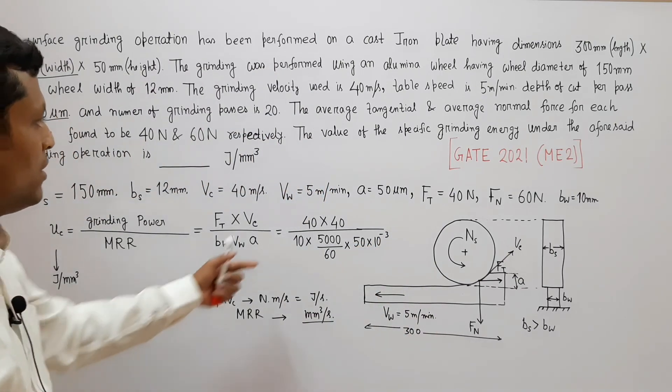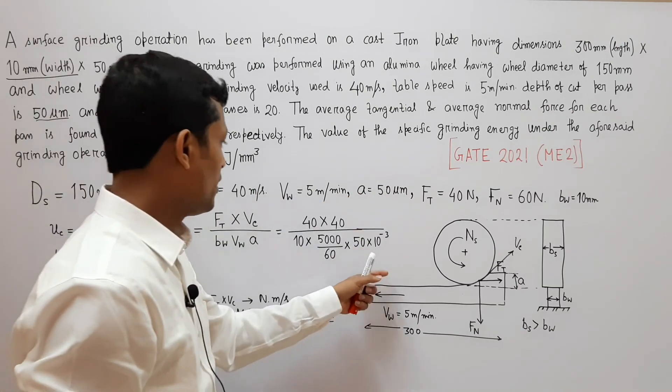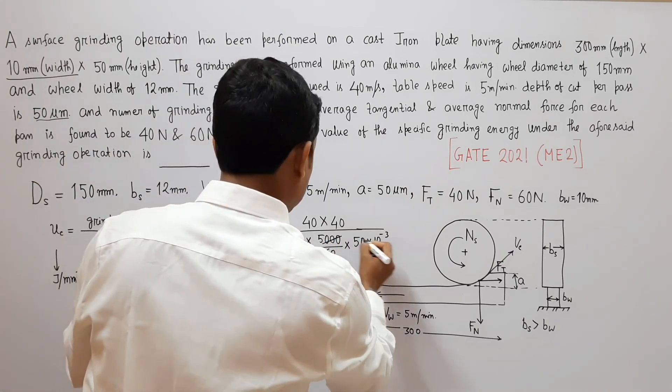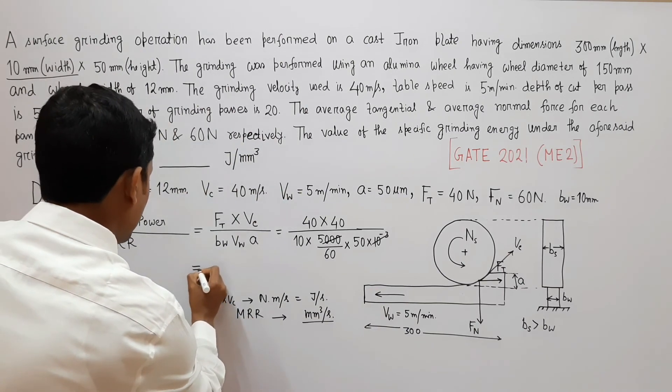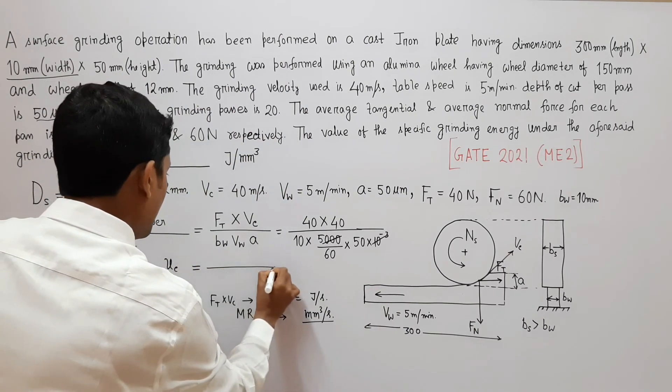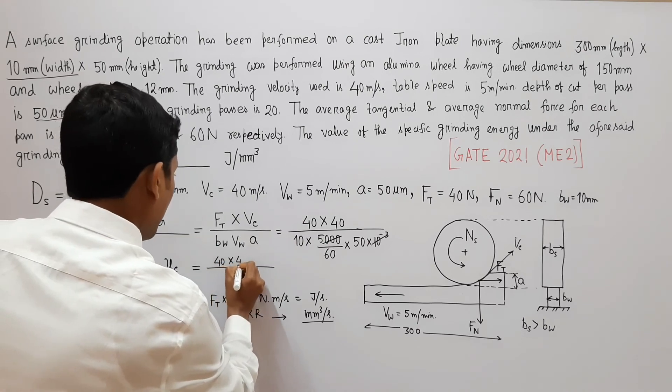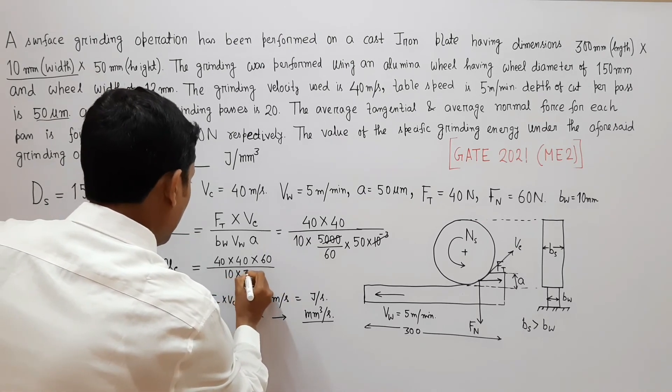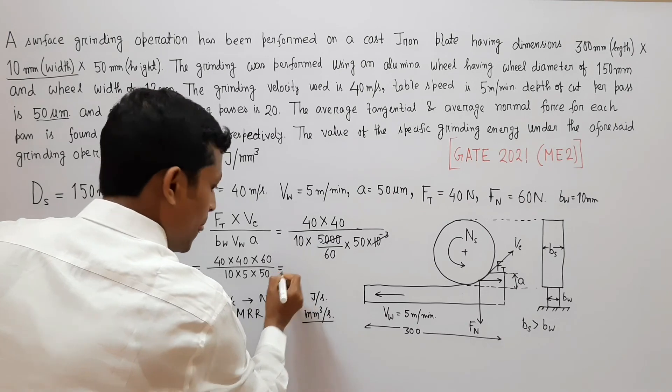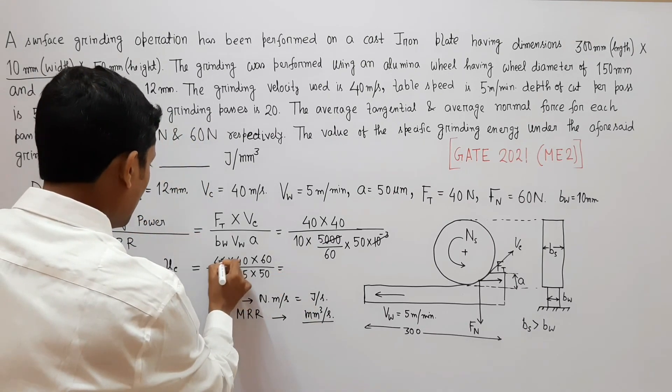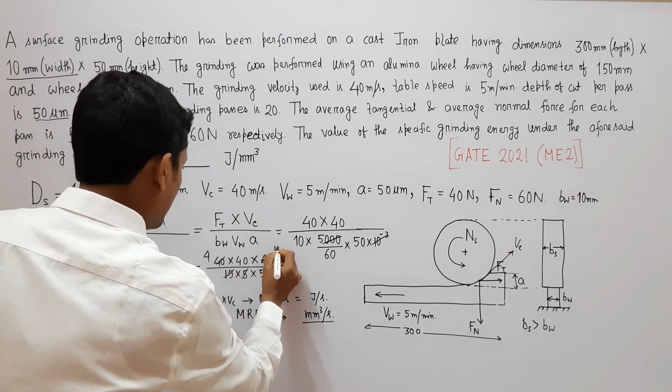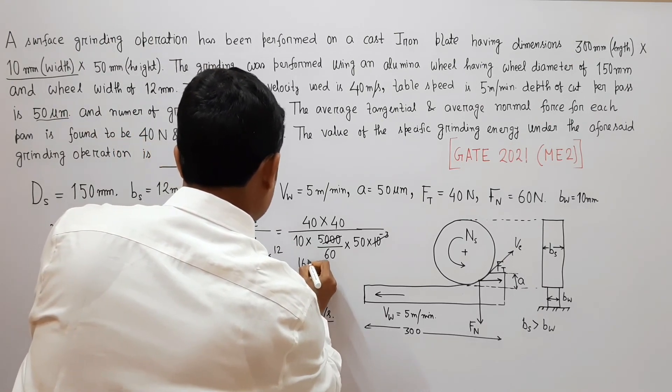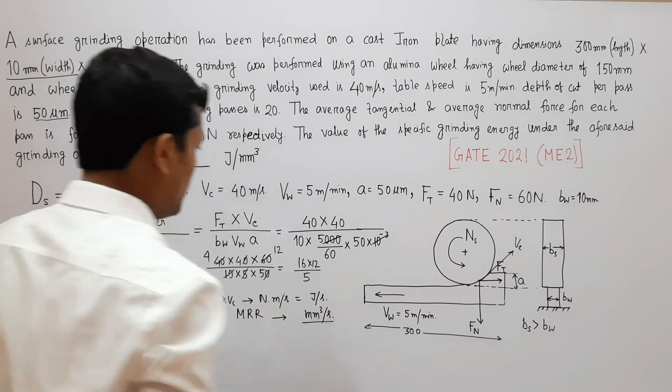Then second will be cancelled out and we will get joule per millimeter cube. So we have to take all these units in millimeter and Vw will be in millimeter per second. So B_w value is 10 millimeter, Vw is 5 meter per minute, so this becomes 5000 millimeter by 60 mm per second. And a is 50 micron, so 50 into 10 to the power minus 3 millimeter.